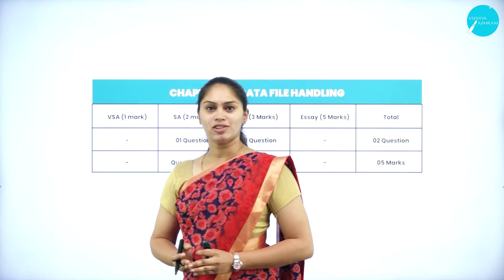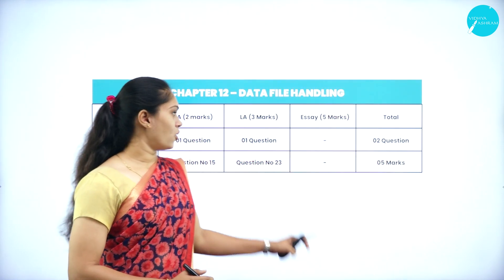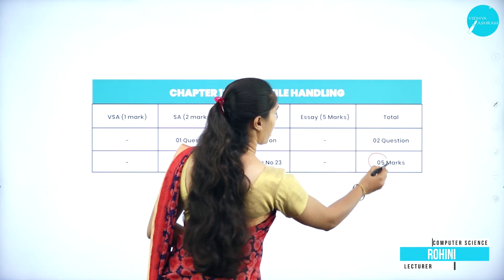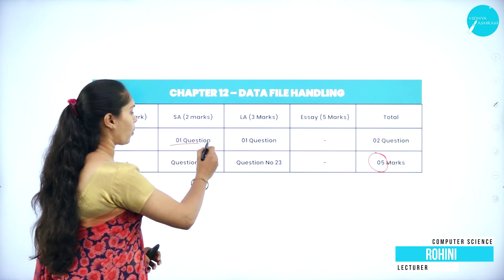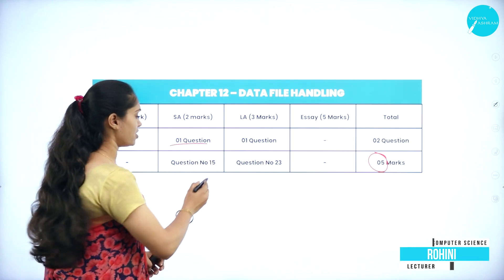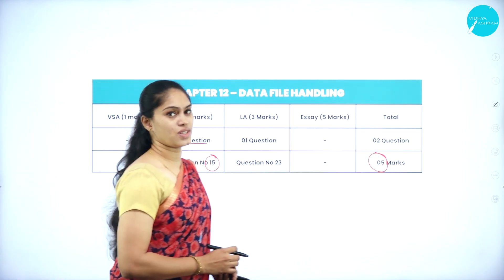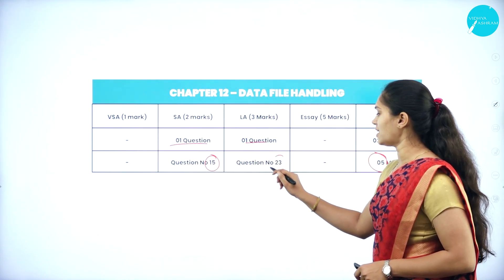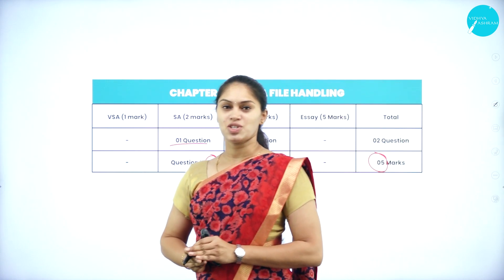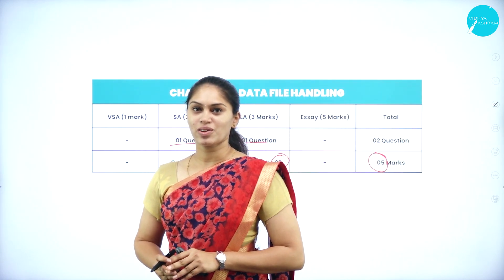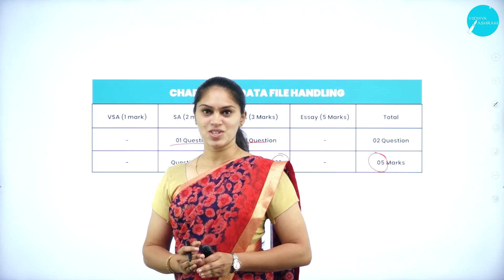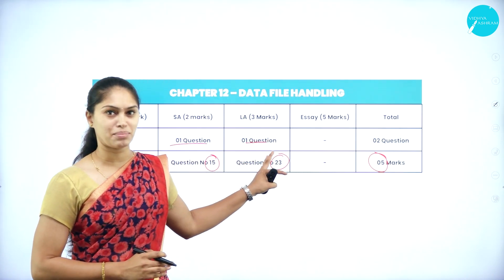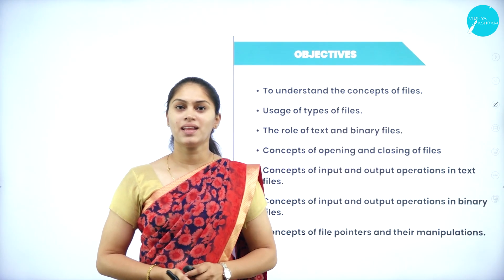What will be the blueprint of this chapter? From this chapter, totally you are going to get five marks. There will be one two-mark question — that is question number 15 in your question paper. After that you are going to get one three-mark question — that is question number 23 in your question paper. So totally two questions from this chapter, giving you five marks.